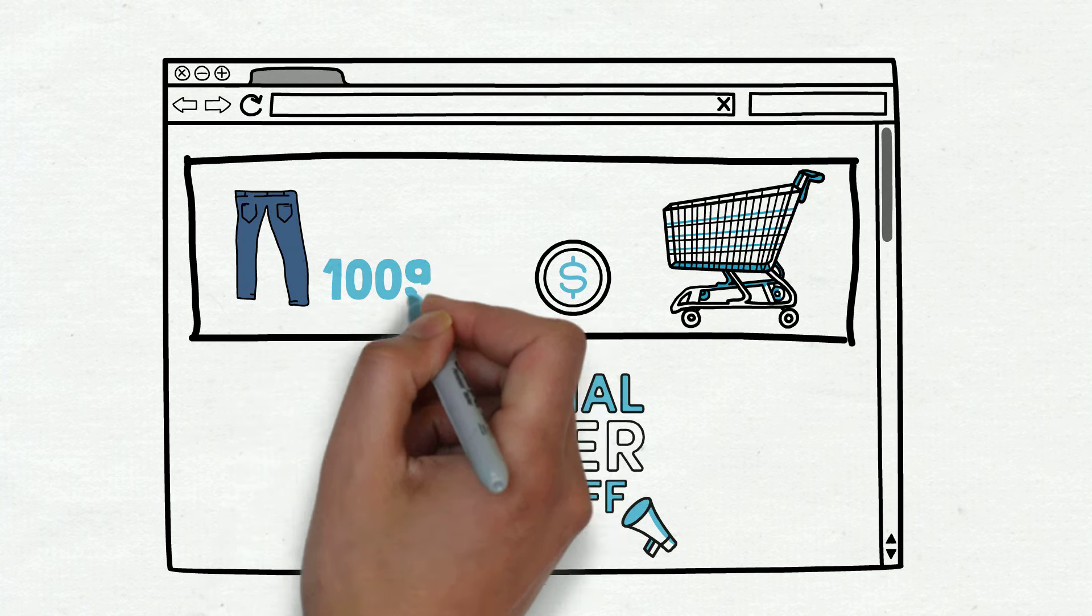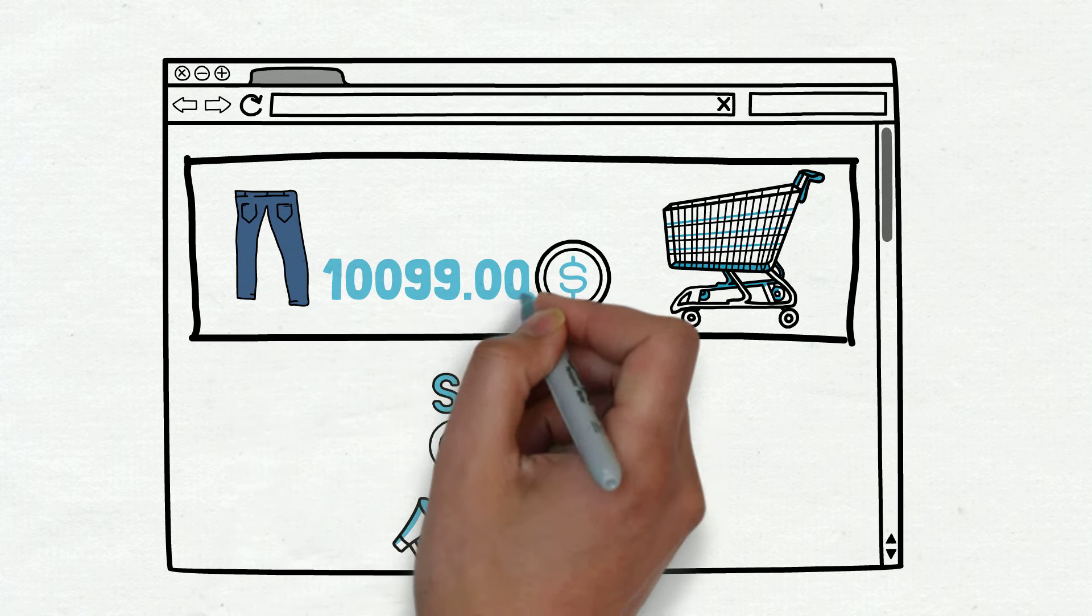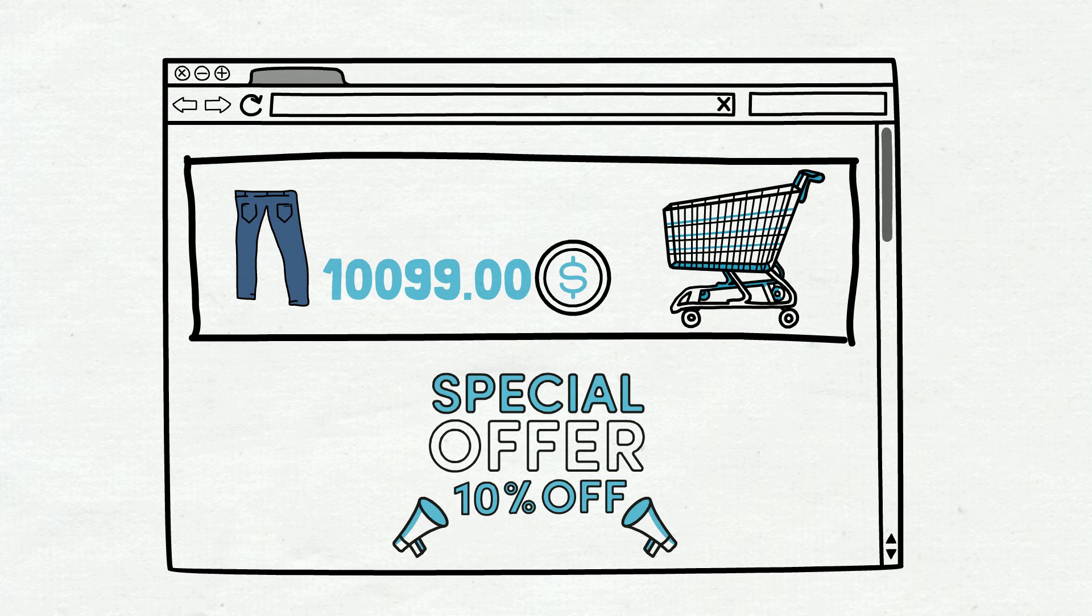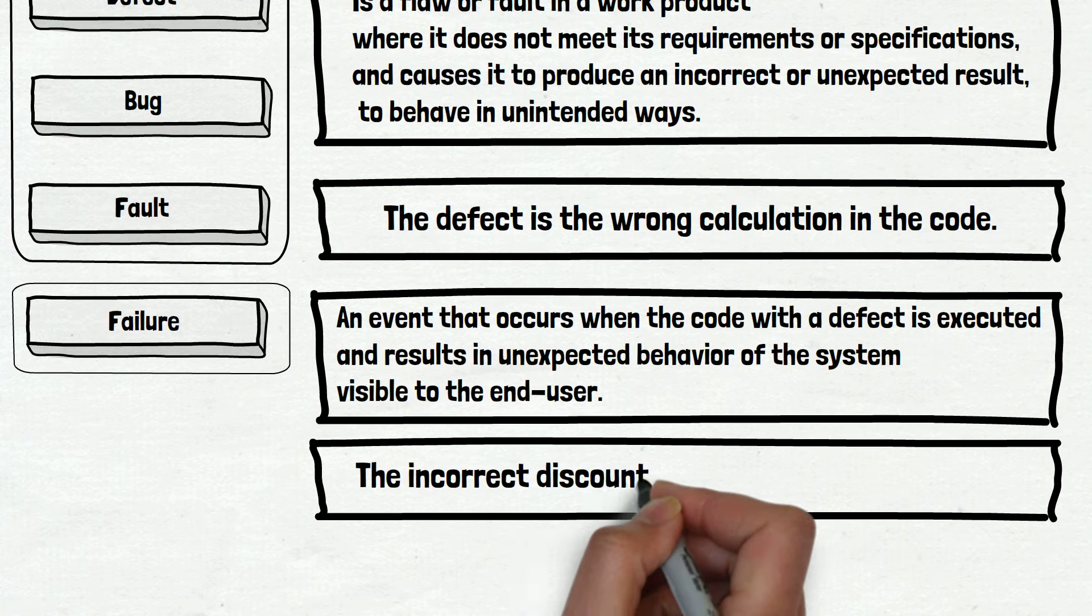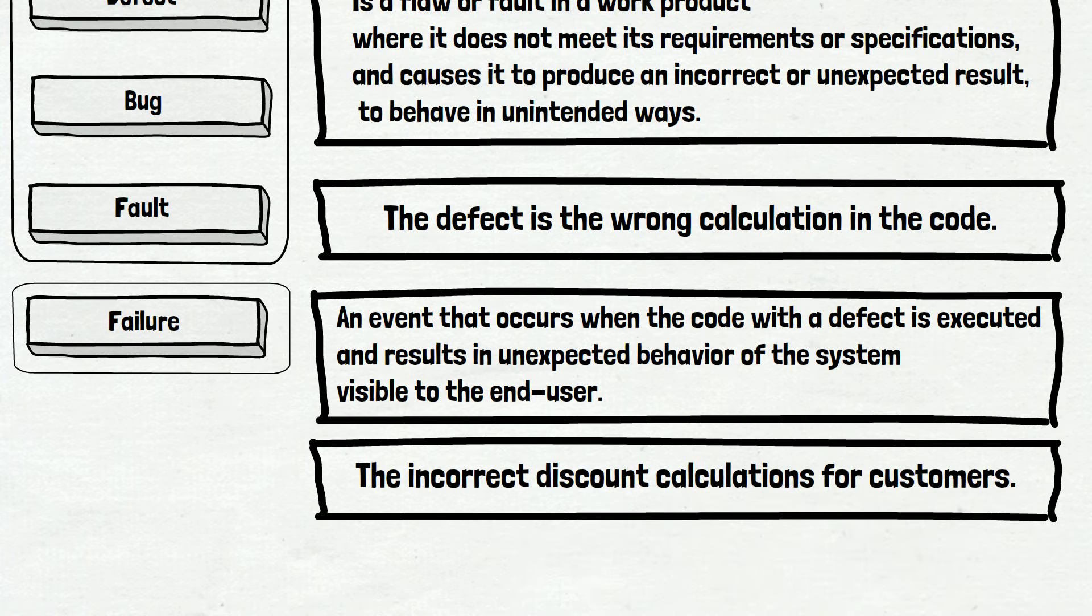And it is $10,099.00. You like the jeans, but you will never buy those. And this is an example of failure: The incorrect discount calculations for customers. And now we can talk about the whole picture.